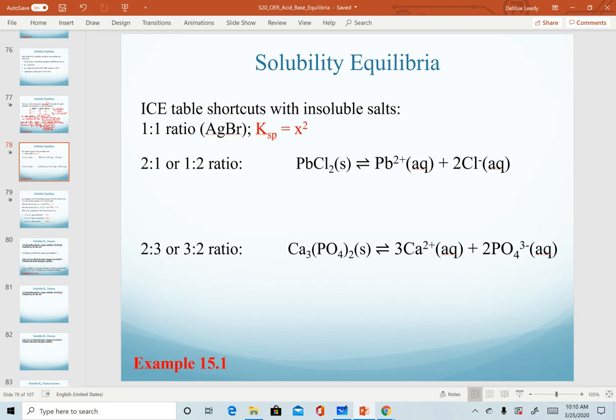For our example of silver bromide that we just worked through on the last screen, that salt dissociates in a one-to-one ratio, and as we saw in our ICE table, because each of our ions solves down to a value of x, our KSP equation comes out to be x squared.